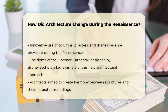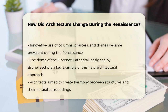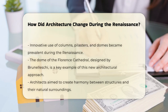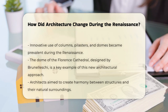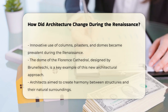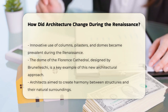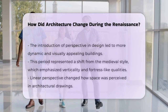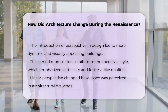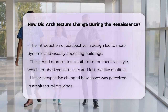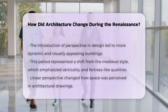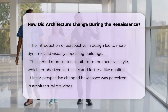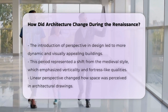Architects sought to create harmony between structures and their surroundings. The use of perspective in design allowed for more dynamic and visually appealing buildings. This was a departure from the medieval style, which often emphasized verticality and fortress-like qualities. The introduction of linear perspective also transformed how space was perceived in architectural drawings.